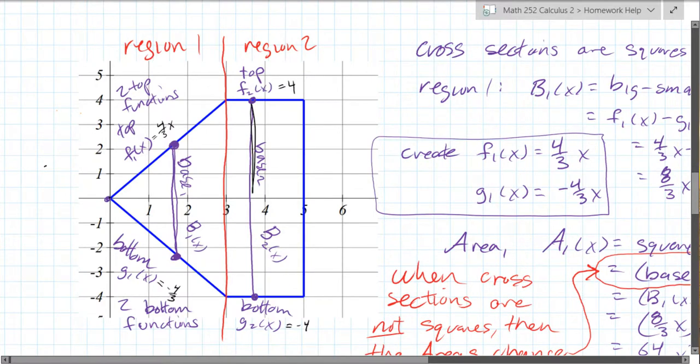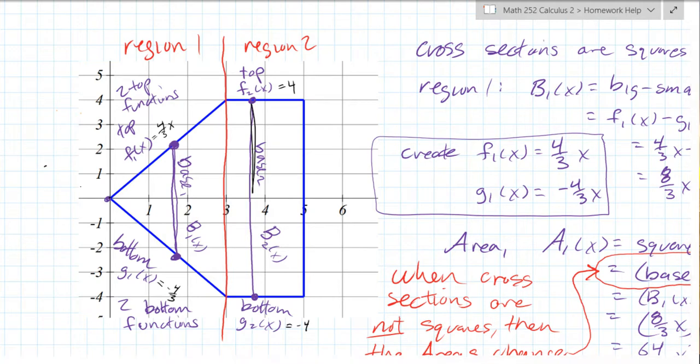So that means that we have to split this into region one and region two, and what I did is I called the top function f, the bottom function g, and then the first region's top function is f1, the second region's top function is f2, and then g1 and g2 are the two bottom functions.